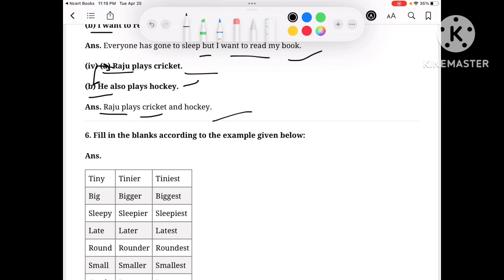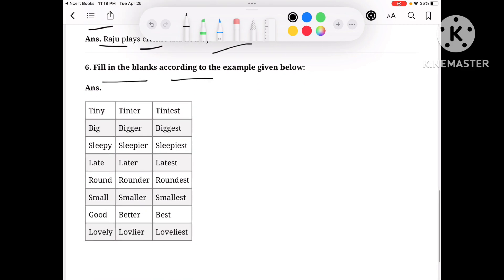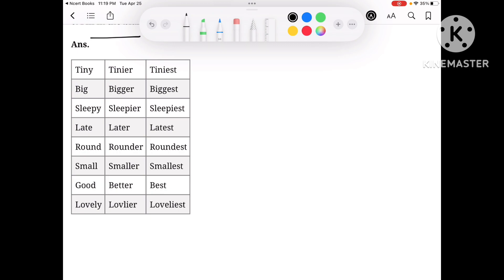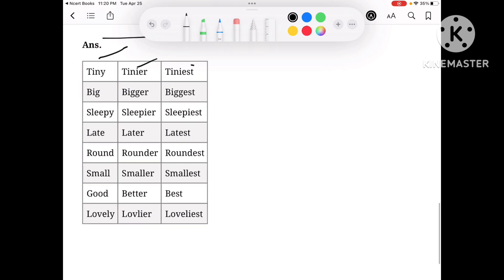Now fill in the blanks according to the example given below. How do you write comparison between two? Tiny, Tinier, Tiniest. Big, Bigger, Biggest.